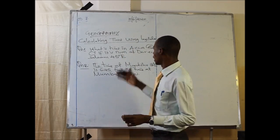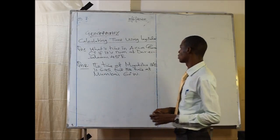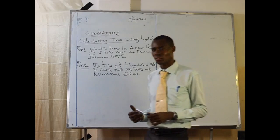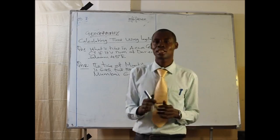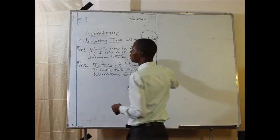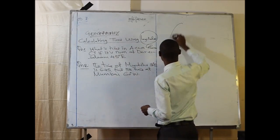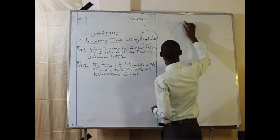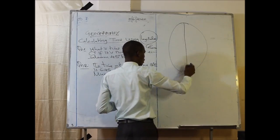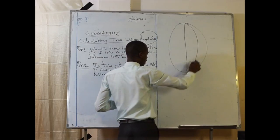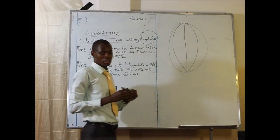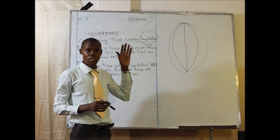This is how we can use the lines of longitude to calculate time. I am calculating time using longitude. First of all, we have to understand what the longitudes are. The longitudes are the lines running from poles to poles — the lines running from the north pole to the south pole. This is what we call the lines of longitude.